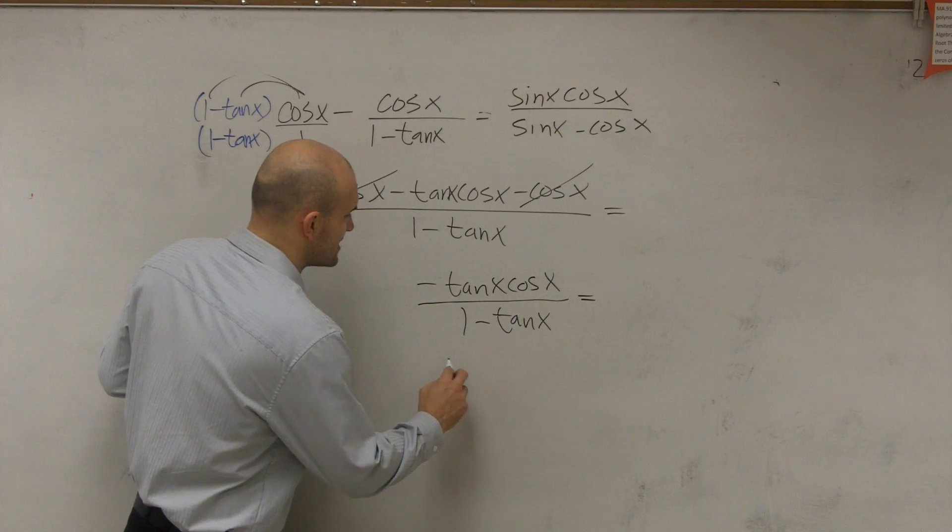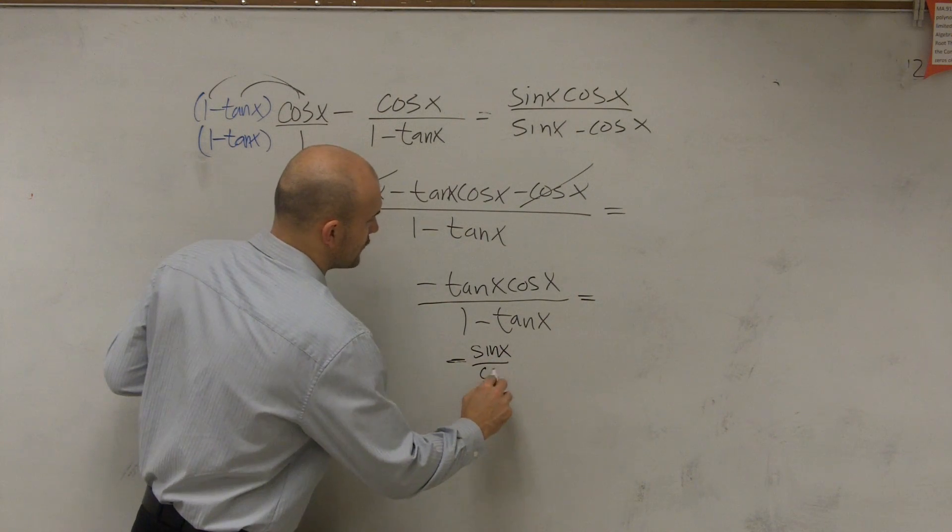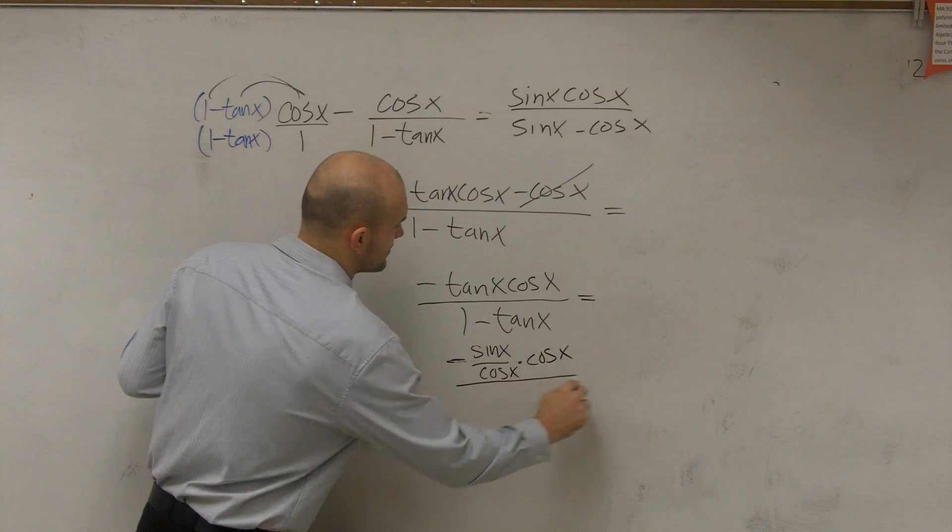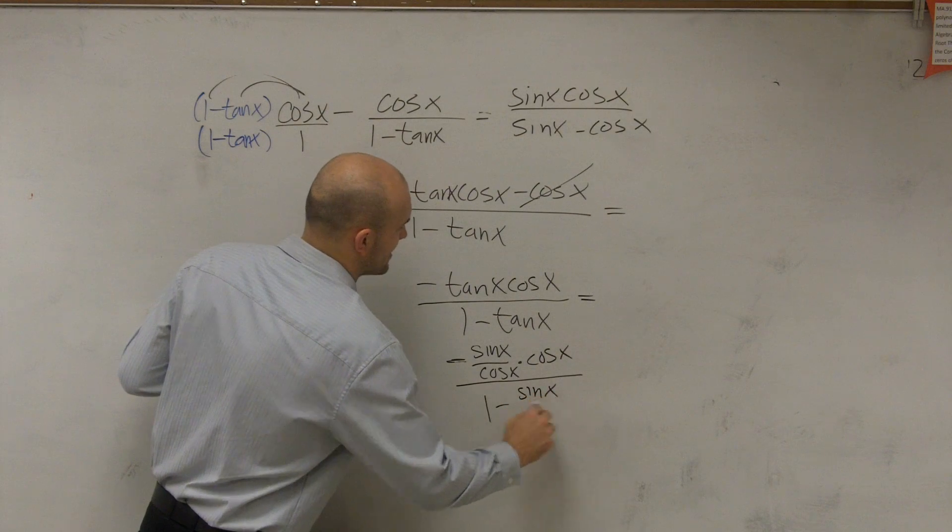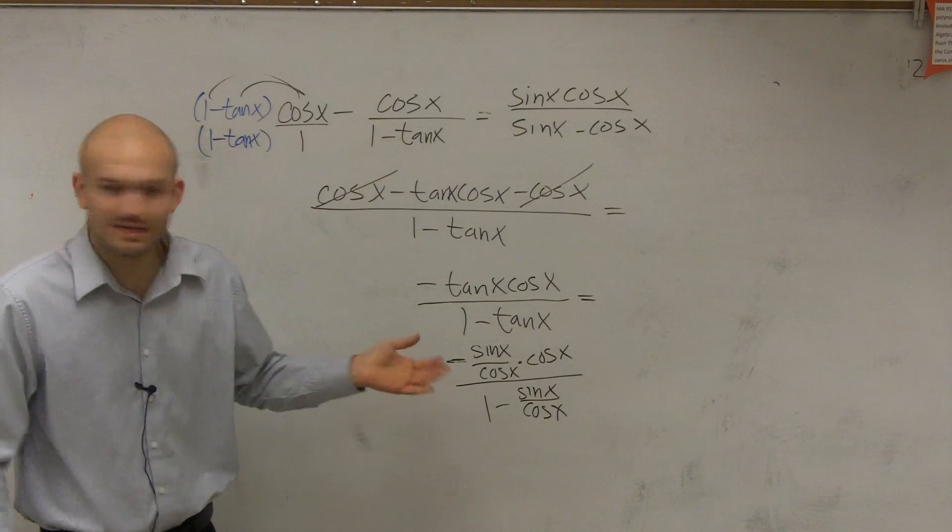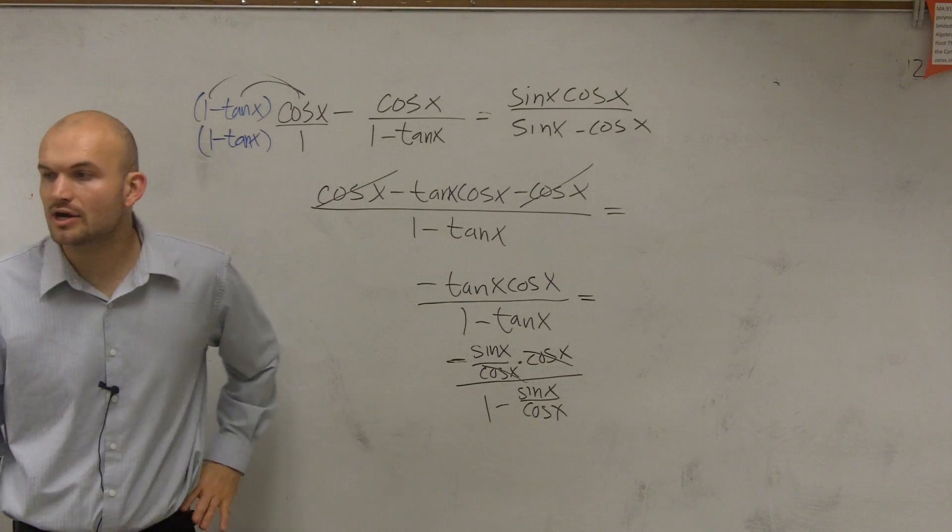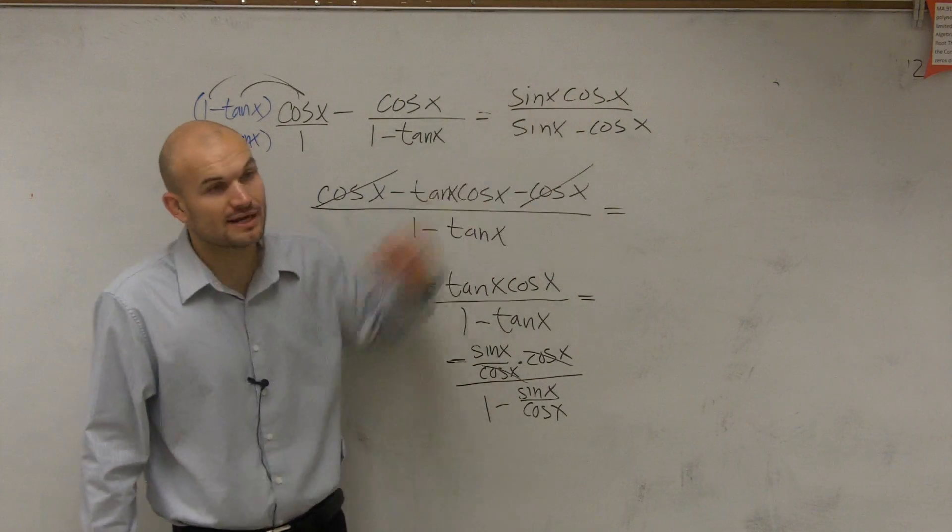So I'll convert to sines and cosines. Therefore, I get negative sine of x over cosine of x times cosine of x divided by 1 minus sine of x over cosine of x. Well, when writing it like this, we notice that my cosine of x are now going to divide out to 1. So now I don't even have a cosine up top.